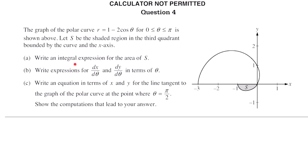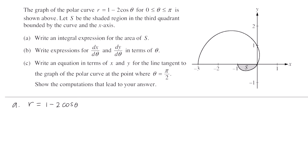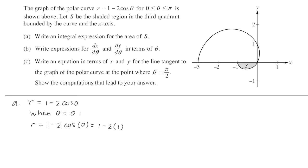Part A says write an integral expression for the area of S. We have the curve r equals 1 minus 2 cosine theta. When theta equals 0, cosine of 0 is 1, so r equals 1 minus 2 times 1, which gives negative 1. So when theta equals 0, r equals negative 1, meaning the point is reflected back, starting here in the third quadrant. The polar curve is defined from 0 to pi.